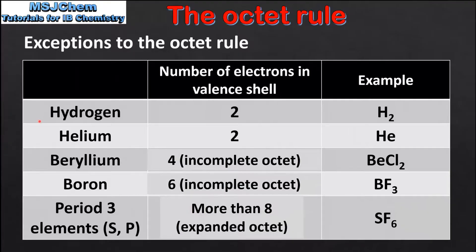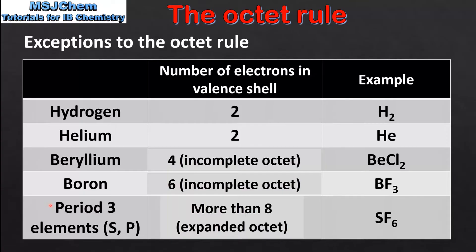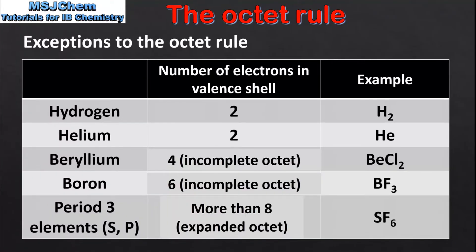To summarize the exceptions: they are hydrogen, helium, beryllium, boron, and period 3 elements such as sulfur and phosphorus. Both hydrogen and helium are stable with 2 electrons in their valence shells. Beryllium and boron are stable with 4 and 6 electrons in their valence shells respectively. Period 3 elements such as sulfur and phosphorus can have more than 8 electrons in their valence shells, which is known as an expanded octet.